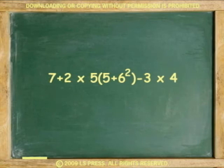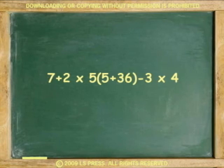Let's try a longer example. In here, the exponent goes first, where 6 squared is 36. Next, the parentheses.